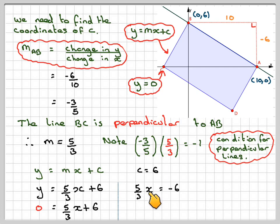So we've got 0 = -5/3X + 6. So -5/3X = -6. And therefore, 5X = -18. And then, dividing through by 5, X = -3.6.